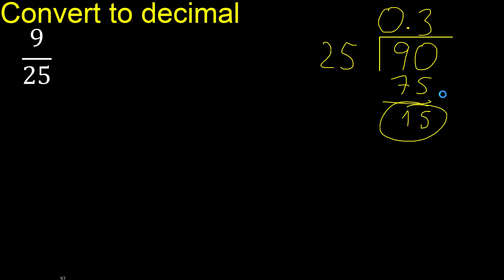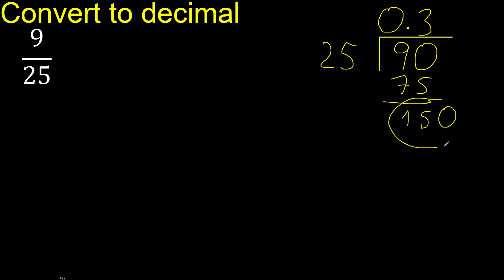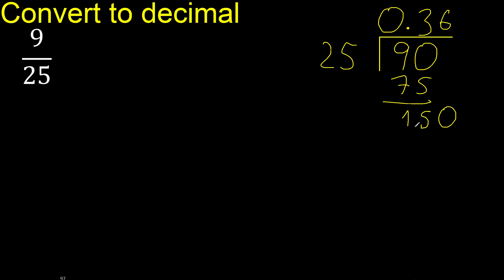Subtract, giving 15. There is no number that goes down, therefore complete with 0. Here: 0 point. 150 — 25 multiplied by which number? Multiplied by 6 is 150.